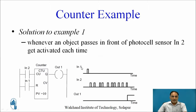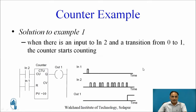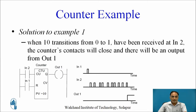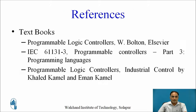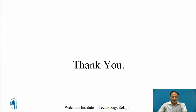In summary: whenever an object passes in front of the photocell sensor, input 2 gets activated. Each time there is a transition from 0 to 1 at input 2, the counter starts counting. After 10 such transitions, the counter contact closes and there is an output from output 1. These are the references for further reading. Thank you.